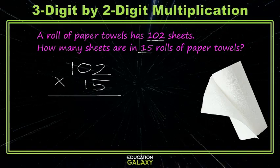We start with 102 times 5. 2 times 5 is 10, carry the 1. 0 times 5 is 0, with the 1 we carried. 1 times 5 is 5. 0 to hold our tens place. 2 times 1 is 2. 0 times 1 is 0. 1 times 1 is 1.